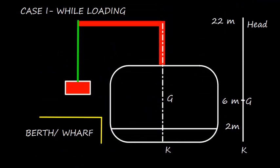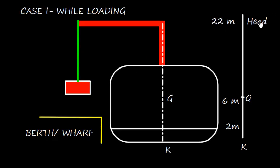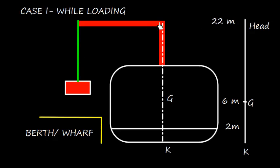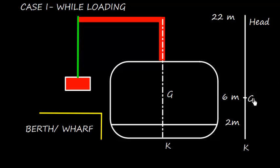So here in this case, the KG, the weight is loaded at the head. The weight, the ship is behaving as the weight is coming at this level or at the head. So we assume that the weight is loaded at this head. So we assume that the weight is loaded at the head.